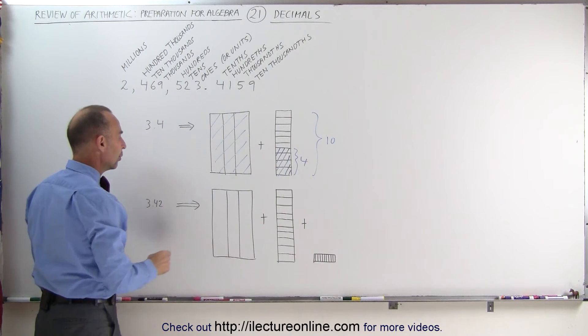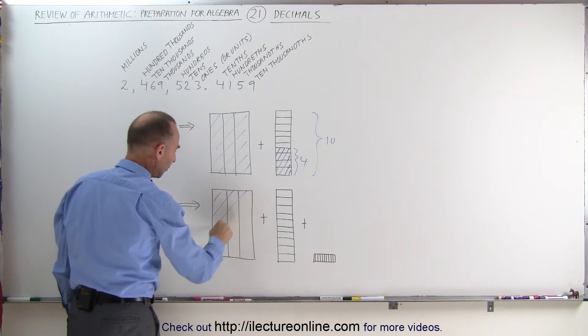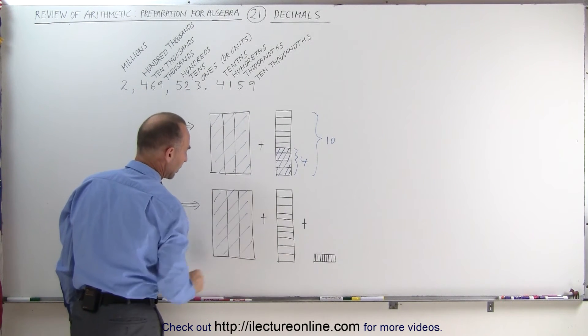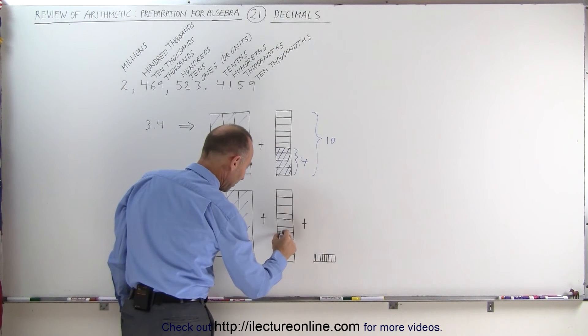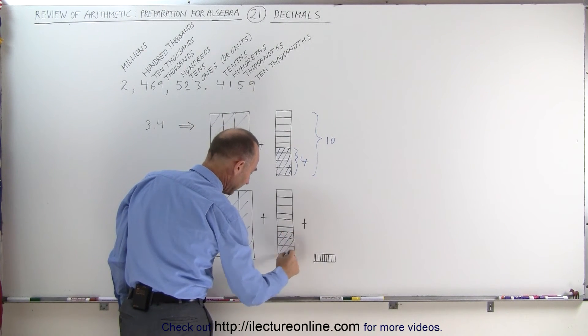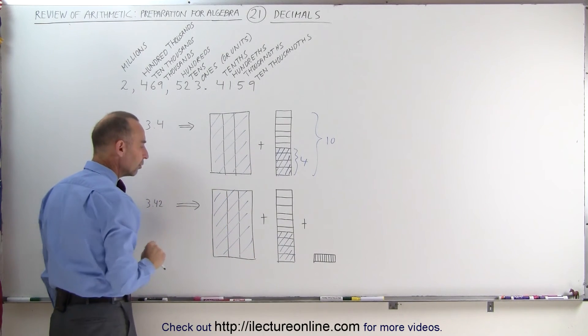Here we have 3.42. We still have 3 whole units, that's represented by the number 3. We have 4 tenths, so we grab 4 of these, 4 out of 10, and then we have 2 one-hundredths.